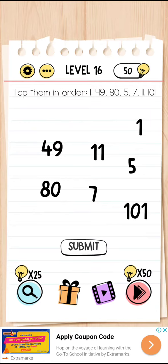Welcome back to my channel. This is level 16 of Brain Test. It says tap them in order: 1, 49, 80, 5, 7, 11, and 101. The trick here is when you tap on 1, your puzzle will be hidden.